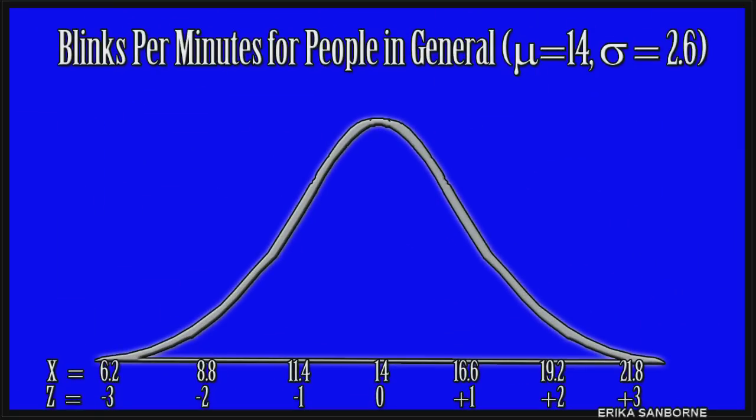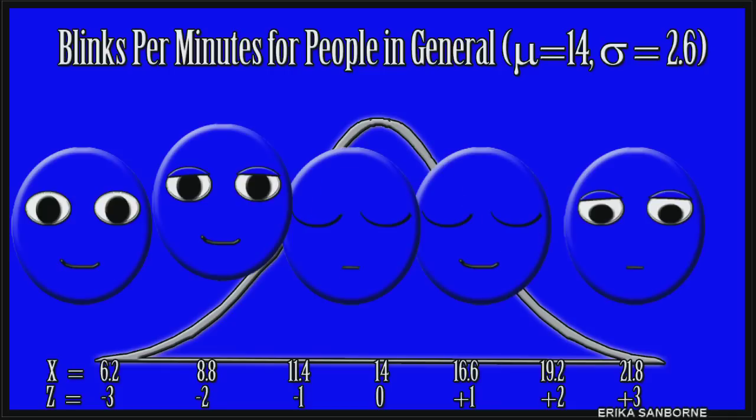We do know that all people blink an average of 14 times per minute, standard deviation of 2.6. We are looking at what is known. This isn't up for debate or challenge. This isn't wrong.